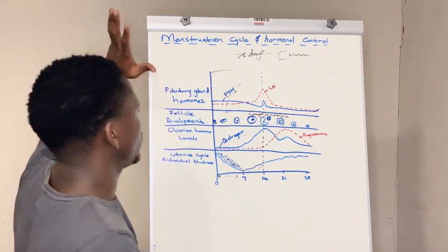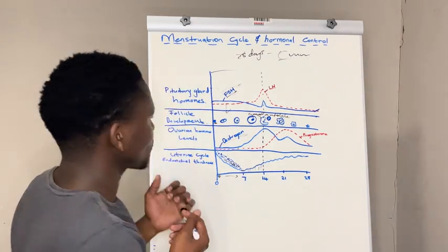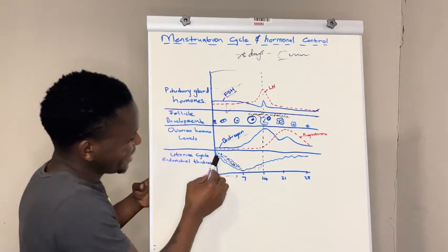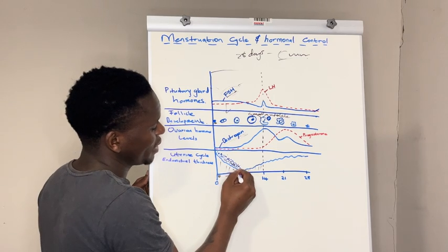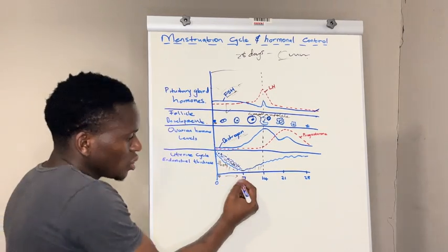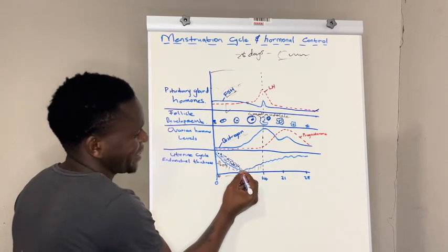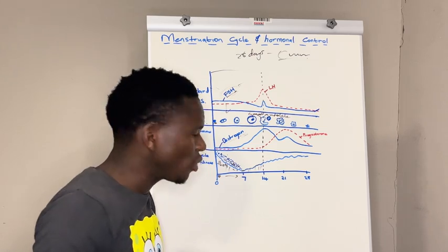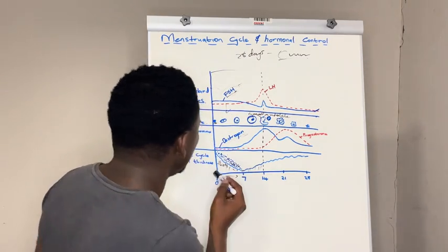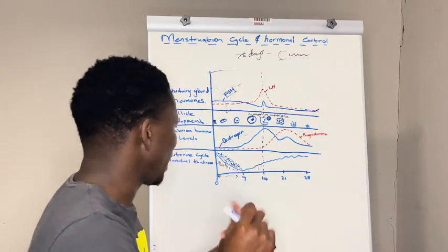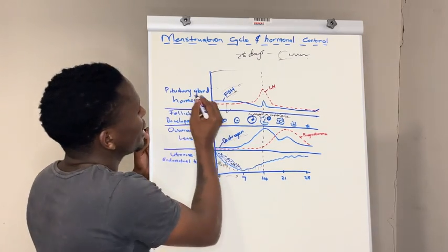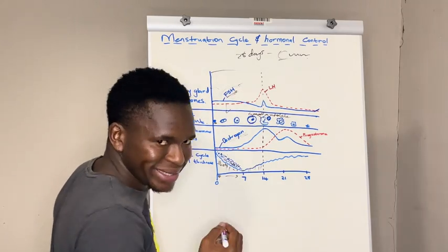From day zero up until day seven, you can see the endometrial lining here — it was thick but it's becoming thin. It becomes very thin. This is basically because the endometrial lining is breaking, and as this endometrial lining breaks, the pituitary gland will secrete the hormone follicle stimulating hormone.